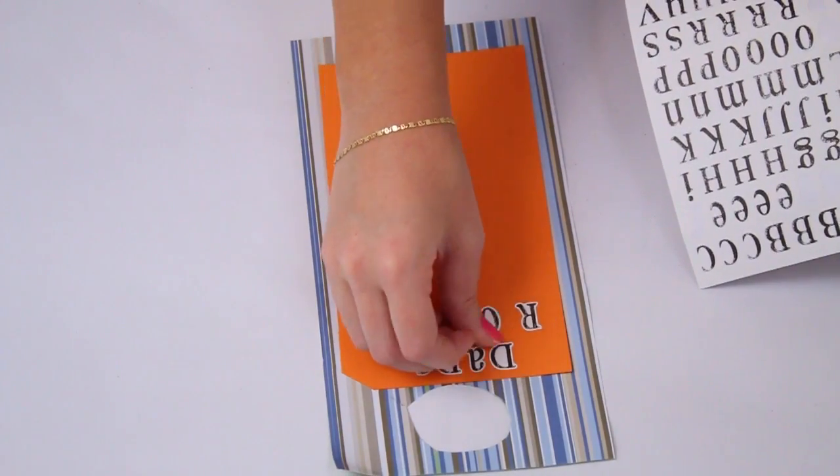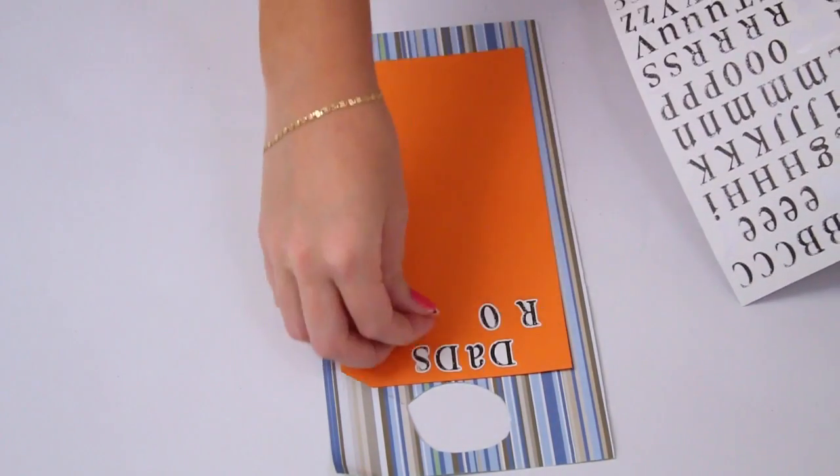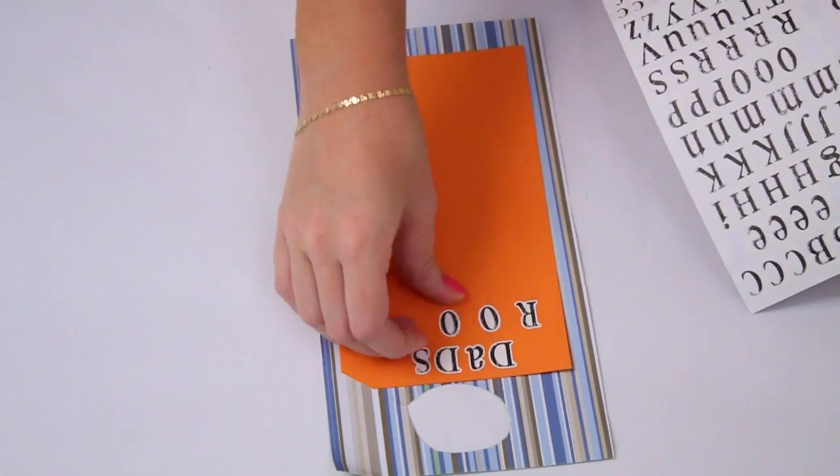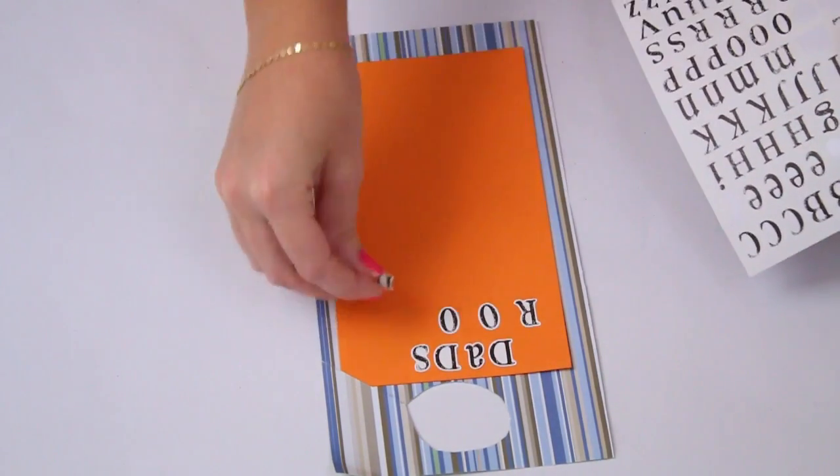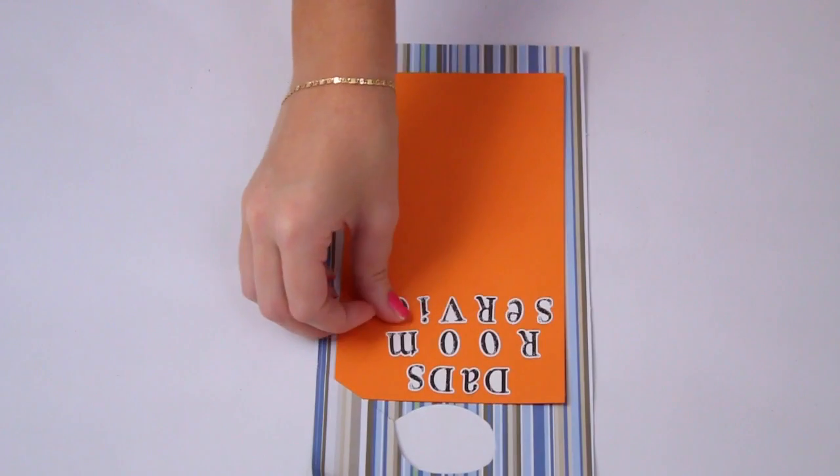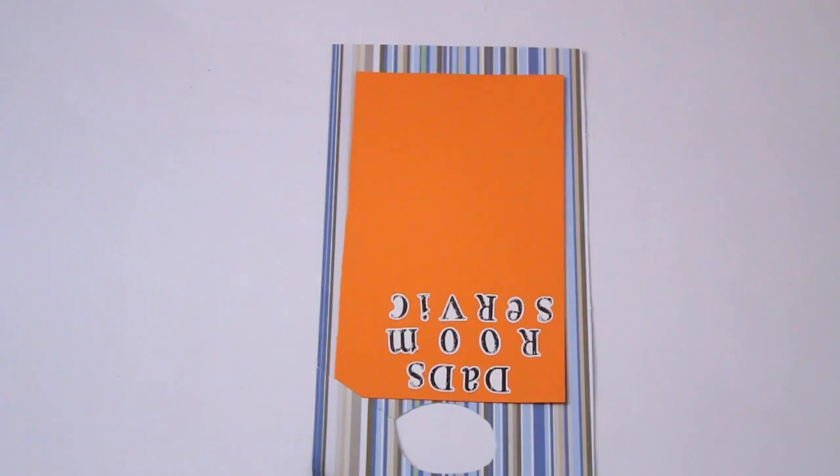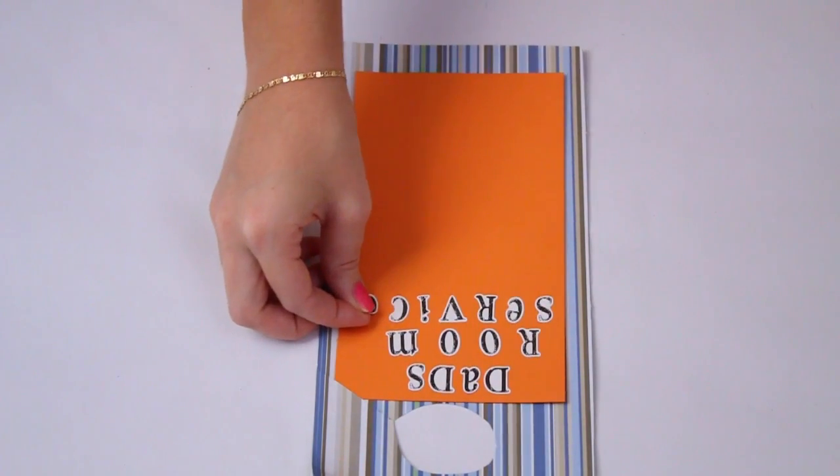So on here I use the stickers again to write 'dad's room service'. So what you want to do is just decorate this however and then give this to your dad the night before Father's Day that way he could hang it on his door and it is ready for the morning. So I went ahead and wrote that instruction for him on here.